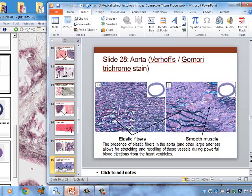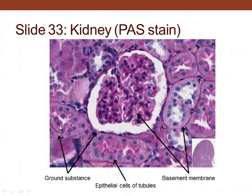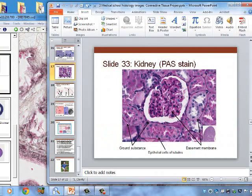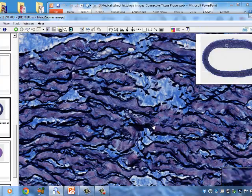The next image is the aorta, using a special stain to highlight elastic fibers. Between the elastic fibers are smooth muscle cells — the typical cell type in blood vessels. Since the vessel is somewhat contracted, the elastic fibers appear as squiggly lines, but they would straighten if the vessel were stretched.